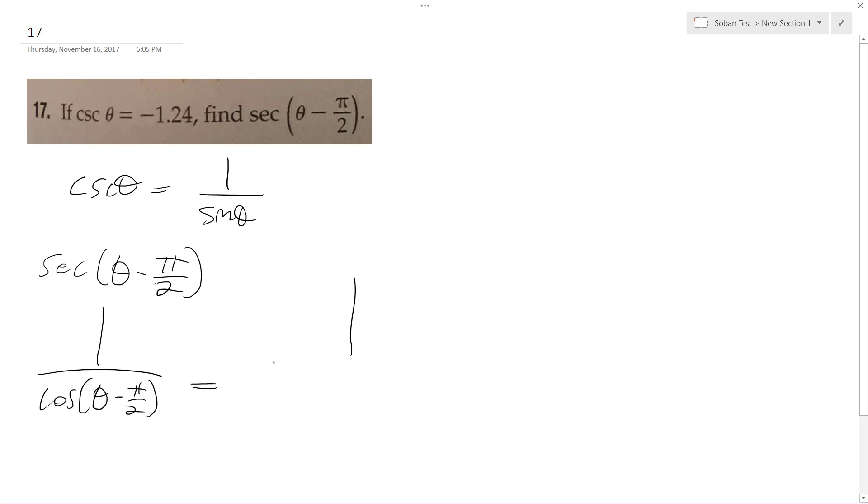So what I'm going to get is 1 over cosine theta cosine of pi over 2, plus sine of theta times sine of pi over 2.